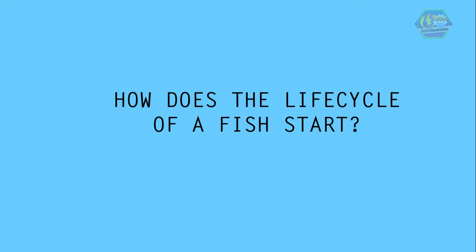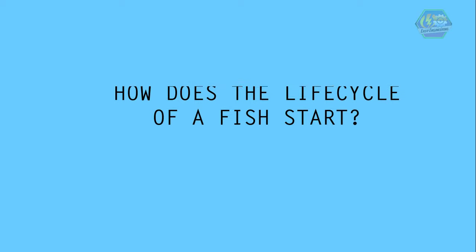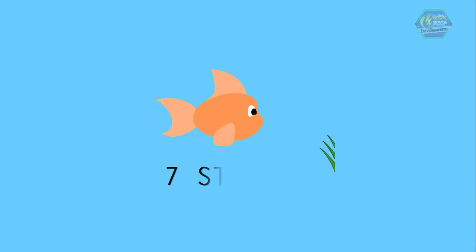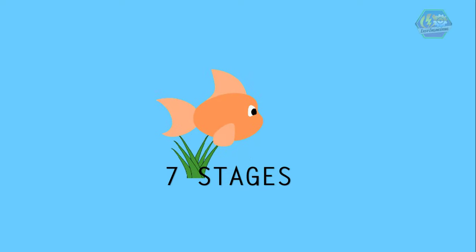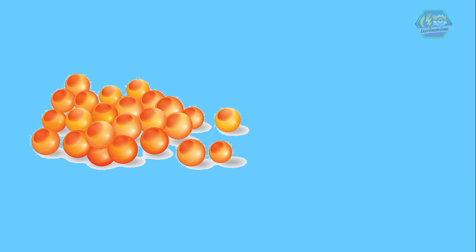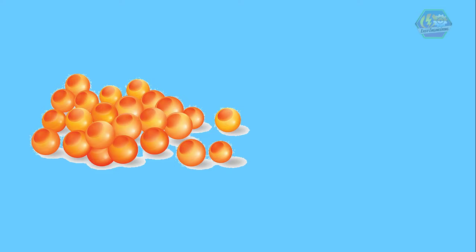So how does the life cycle of a fish start? Although every fish species is different in terms of reproduction, their life cycle can be divided into seven stages. These seven stages are common in almost all of the different species of fish. Everything starts with the egg. Like other eggs such as birds and reptiles, the embryo is formed inside the egg once the egg is fertilized.